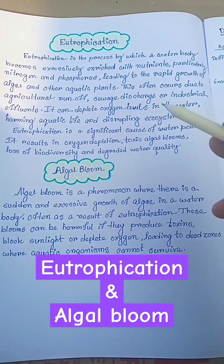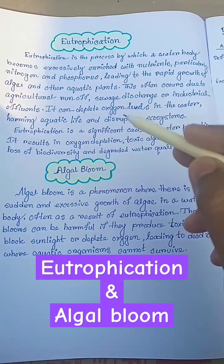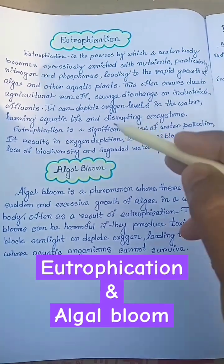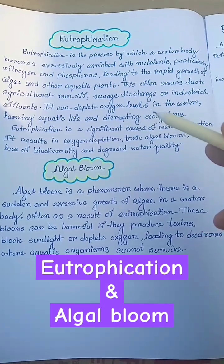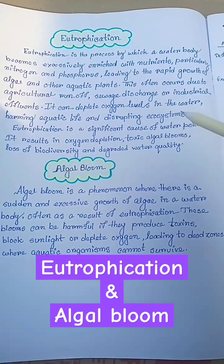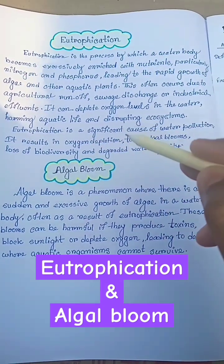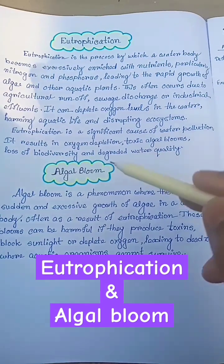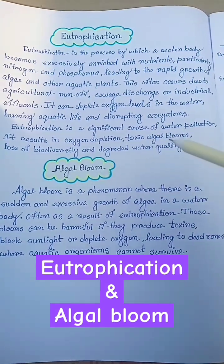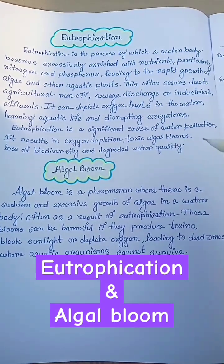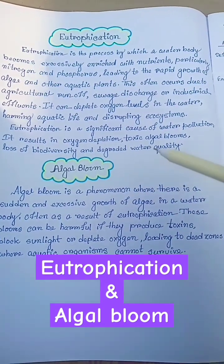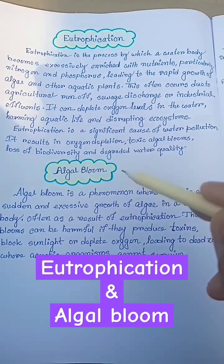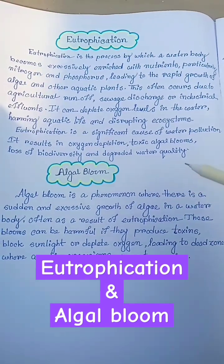This often occurs due to agricultural runoff, sewage discharge, or industrial effluents. It can deplete oxygen levels in the water, harming aquatic life and disrupting ecosystems. Eutrophication is a significant cause of water pollution. It results in oxygen depletion, toxic algal blooms, loss of biodiversity, and degraded water quality.